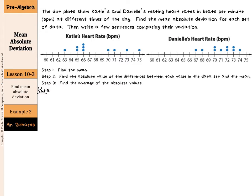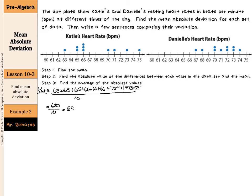We'll start with Katie, beginning with step one: calculating her mean. We'll have 63 plus 65, 65, there are three 66's, then 70, 71, 73, and 75. There are 10 data values. So this would be 680 divided by 10, which is a mean of 68.